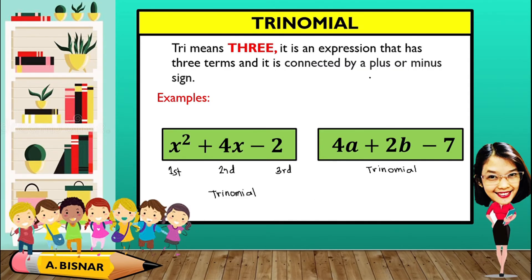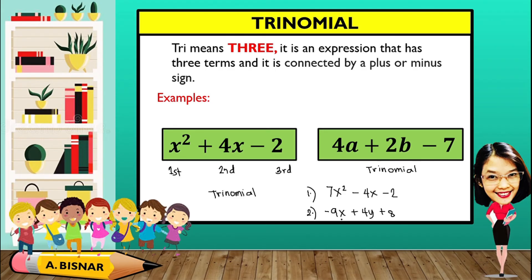However, it is not always plus then minus. It can also be like this: 7x squared minus 4x minus 2 — it has two minus signs, but as long as it has 3 terms, it is considered a trinomial. Another: negative 9x plus 4y plus 8 — it has two plus signs, but since we have 3 terms, it is still a trinomial. So do not be confused that it is only plus or minus.